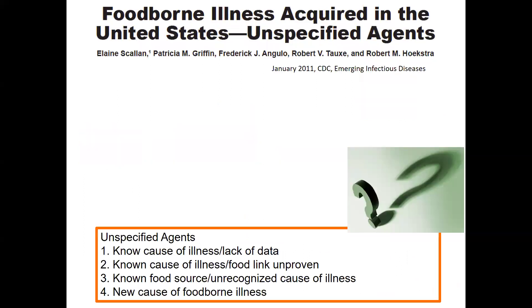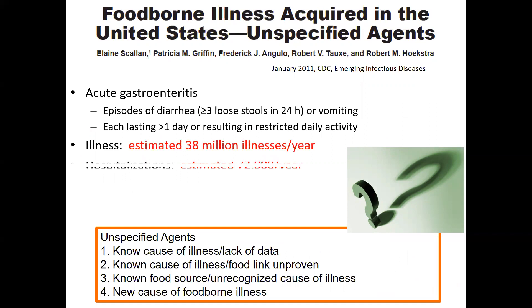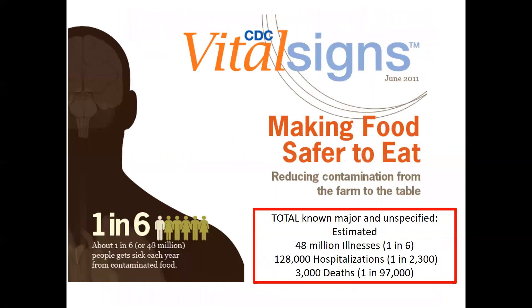There is also a high number of foodborne illnesses for which we do not know or have not identified the causative agent. There are instances of acute gastroenteritis documented every year for which the cause has not been determined but may be linked to food. This could be something new that we have not yet identified, or due to the fact that we could not determine the agent or the food linkage associated with these individual illnesses. Overall, it's been estimated that every year there are approximately 48 million cases of foodborne illness in the United States, meaning that one in every six Americans gets sick from contaminated food each year.